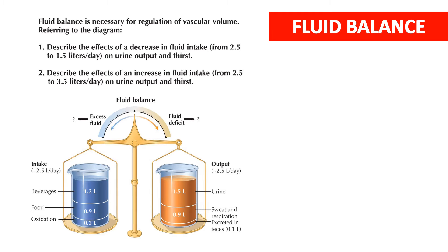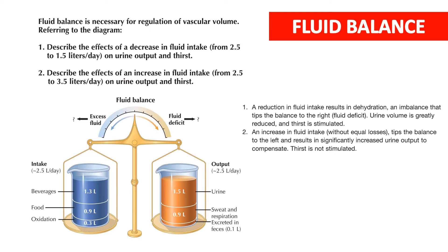Fluid balance is necessary for regulation of vascular volume. Describe the effect of a decrease in fluid intake from 2.5 to 1.5 liters on urine output and thirst, and the effect of an increase in fluid intake. A reduction in fluid intake results in dehydration and a fluid deficit; urine volume is greatly reduced and thirst is stimulated. An increase in fluid intake without equal losses results in significantly increased urine output to compensate. Thirst is not stimulated.